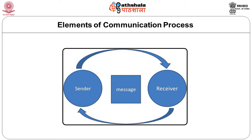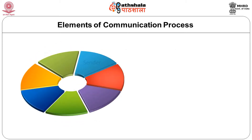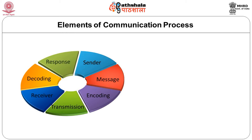In detail, the seven elements in a formal communication process are: number 1, sender; number 2, message; number 3, encoding; number 4, transmission; number 5, receiver; number 6, decoding; and number 7, response. These all together complete the communication process.